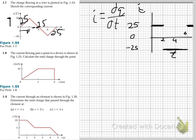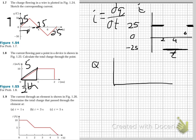Question 1.8: the current flowing past a point in a device is shown in figure 1.25 — calculate the total charge through the point. To get the charge, you take the integral, and the integral is the area. The area of this triangle is 5, using half base times height.